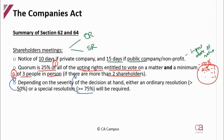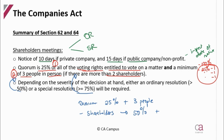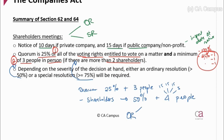Let's look at an example. Quorum is 25% and three people need to be there. Say they've got shareholders with 50% of the voting rights present and there are four shareholders — each has 15%, and one has 5%, getting us to that 50% of the voting rights present. If they are passing an ordinary resolution, then 26% or more need to vote in favour.